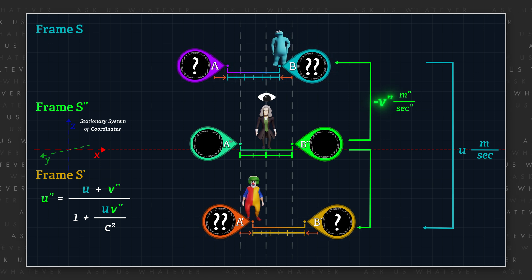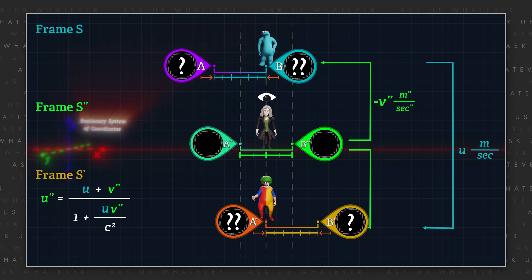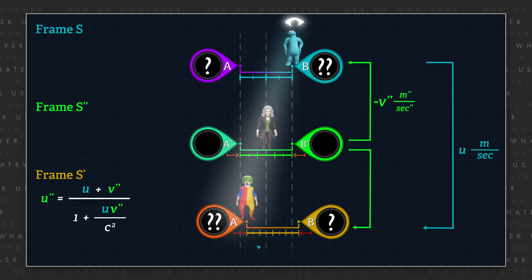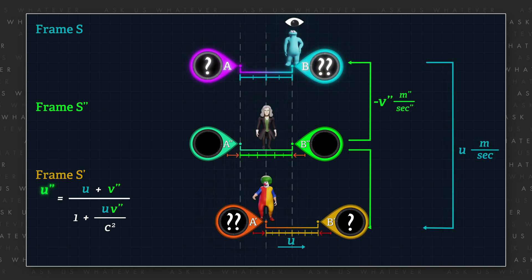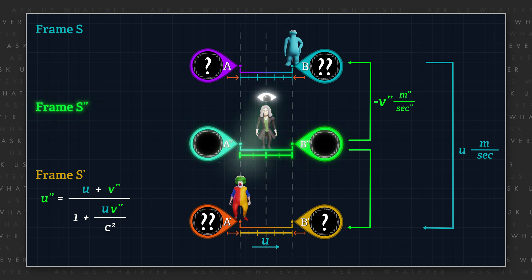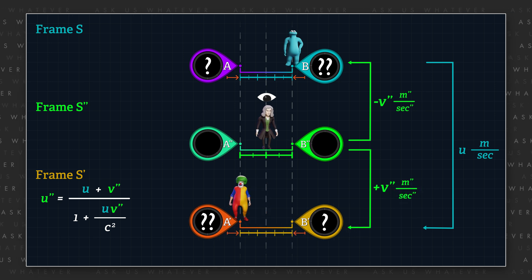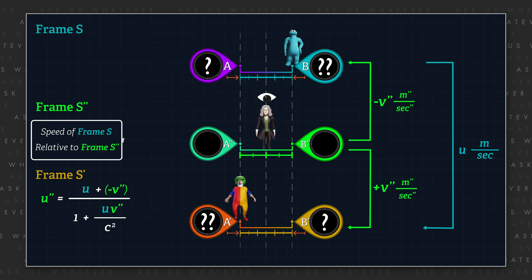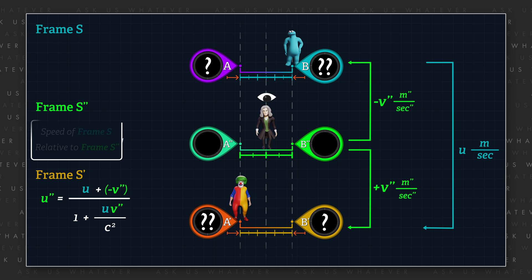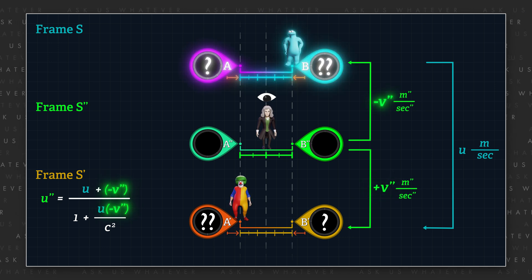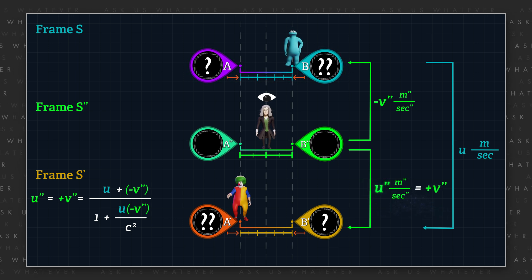So, if frame S moves at speed negative V double prime meters double prime per second double prime with respect to the stationary system of coordinates of frame S double prime, and observers in frame S observe frame S prime — the object — to be moving at speed U meters per second relative to frame S, then U double prime is the speed that our neutral observer in frame S double prime will observe frame S prime to be moving, as measured in the neutral observer's units of meters double prime per second double prime. We can write the relativistic velocity addition formula to solve for U double prime as U plus negative V double prime, all divided by 1 plus U times negative V double prime over C squared. And since relative to frame S double prime, frame S prime moves at an equal but opposite speed — in the positive X direction compared to frame S — we can substitute positive V double prime for U double prime in the velocity addition formula.